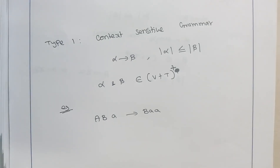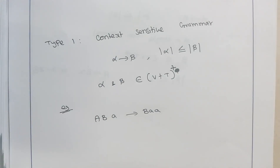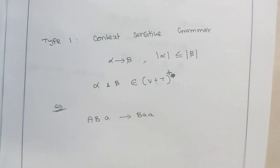For context sensitive grammar, the mathematical model that accepts it is called a linear bounded automata, which has a finite length as a memory unit.